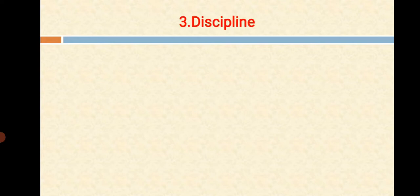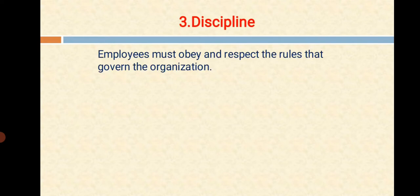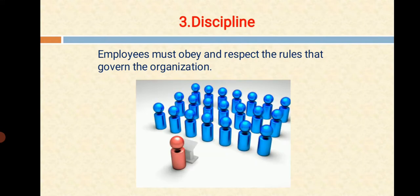And the next one is Discipline. Employees must obey and respect the rules that govern the organization. Without discipline, nothing can be accomplished. It is the core value for any project or any management. Good performance and sensible interrelations make the management job easy and comprehensive. Employees' good behavior also helps them smoothly build and progress in their professional careers.